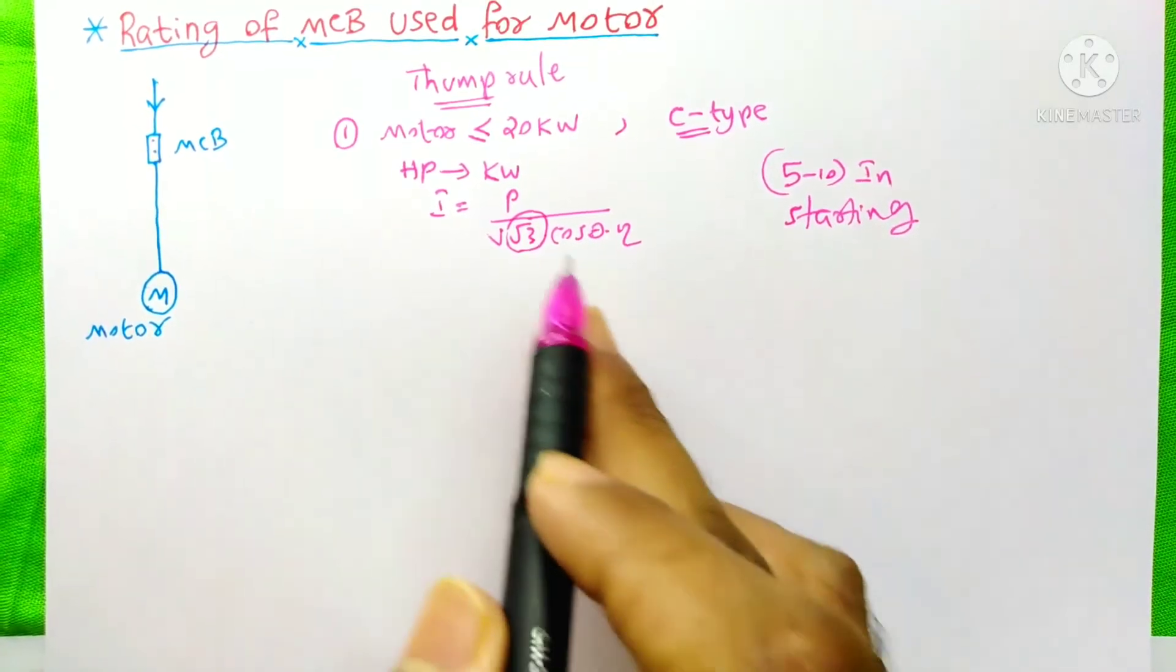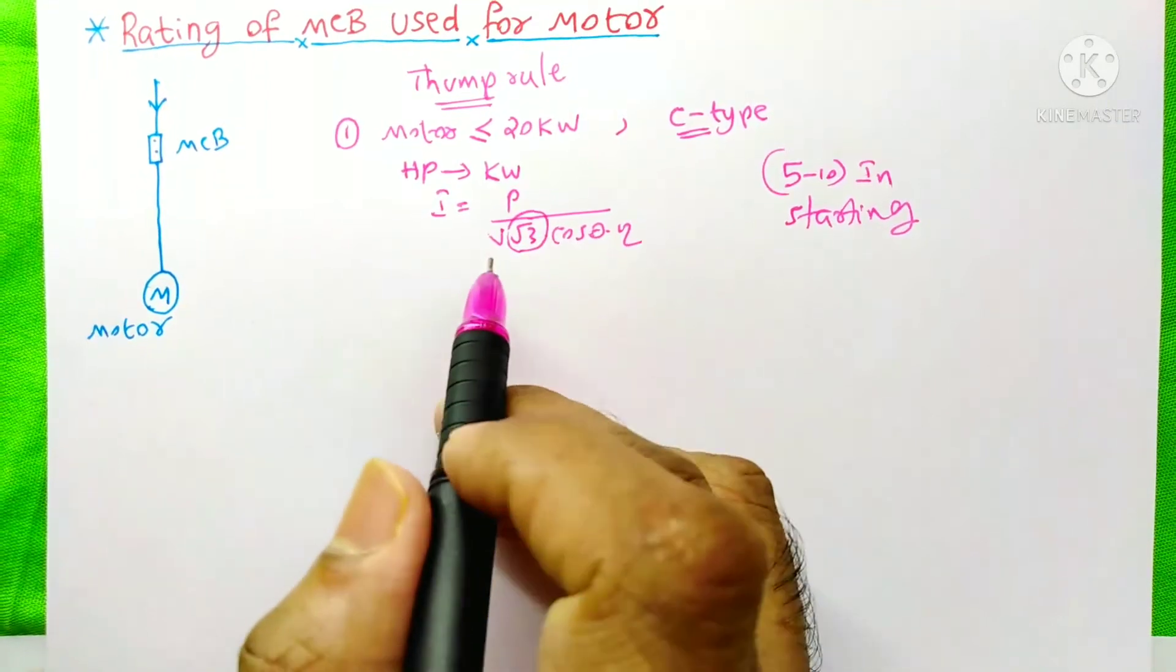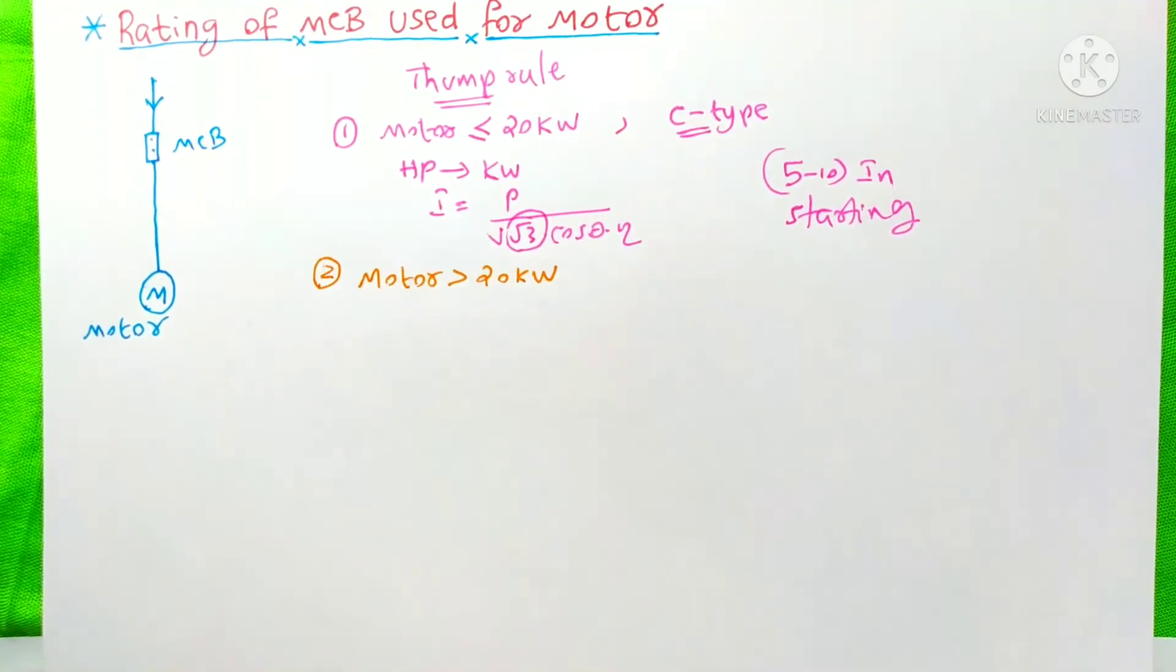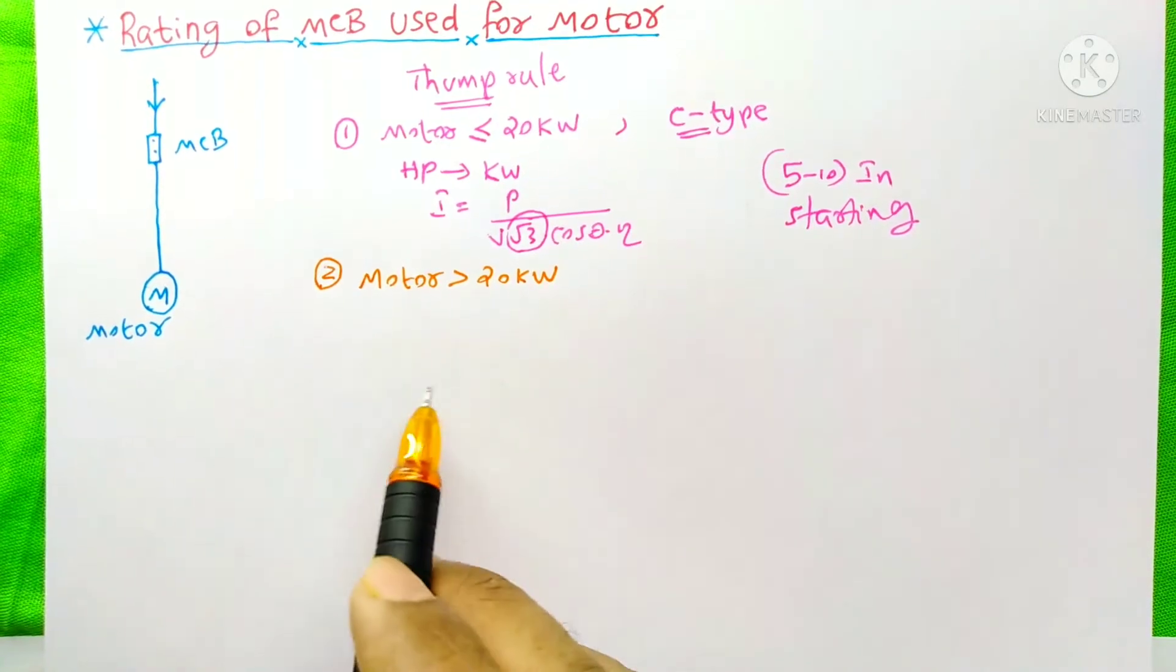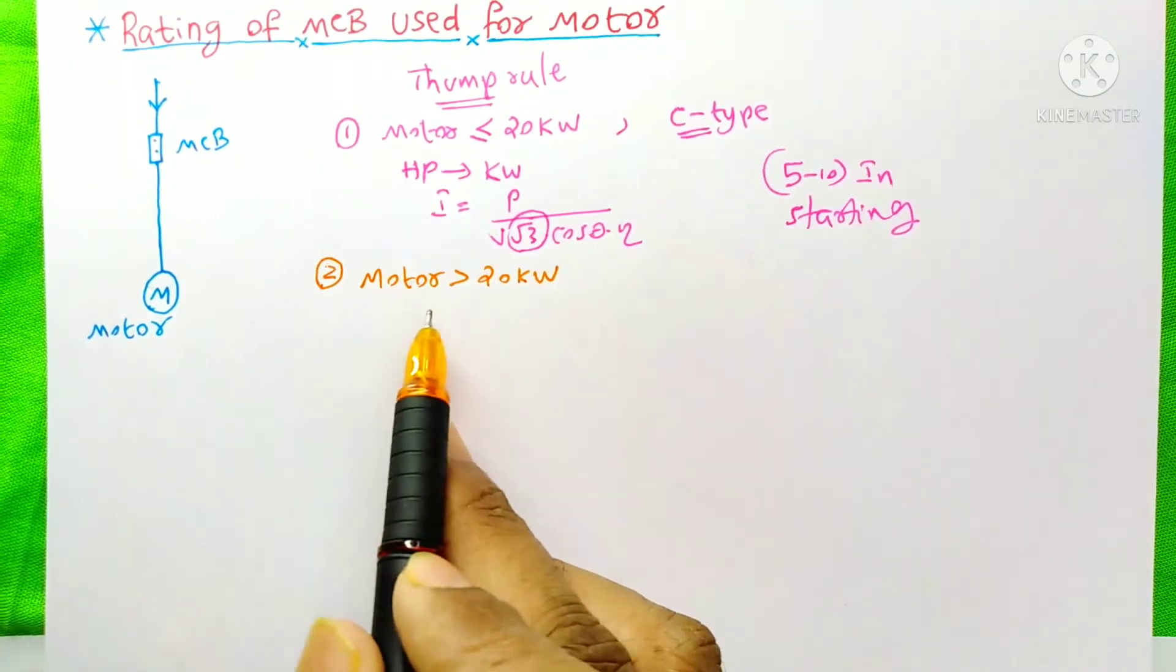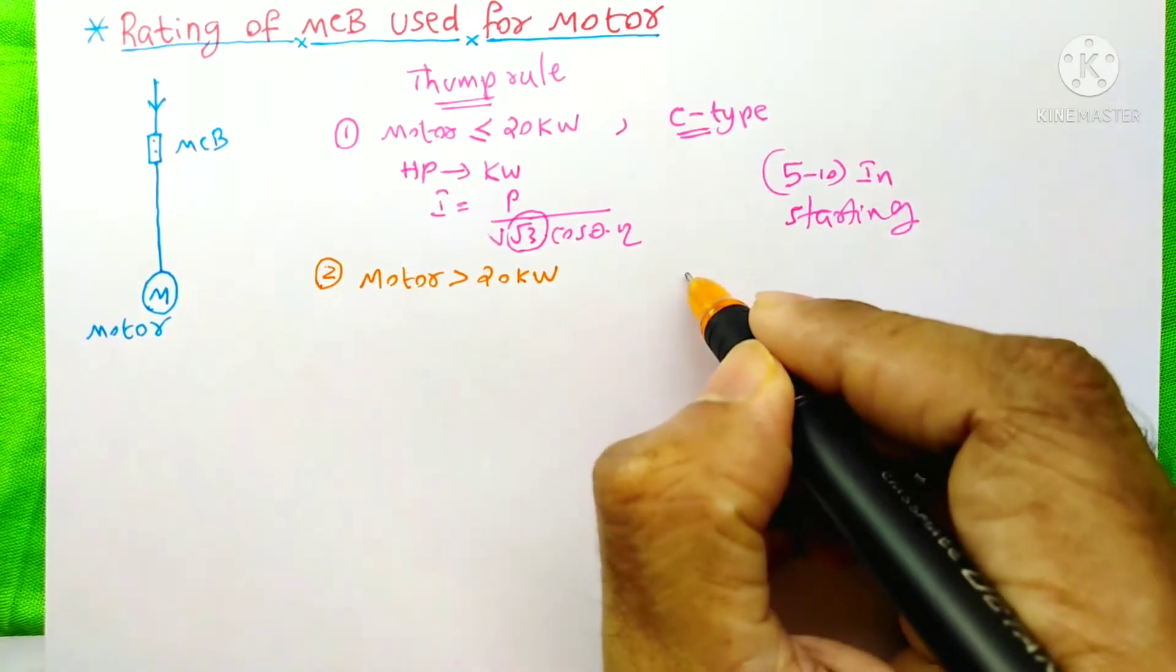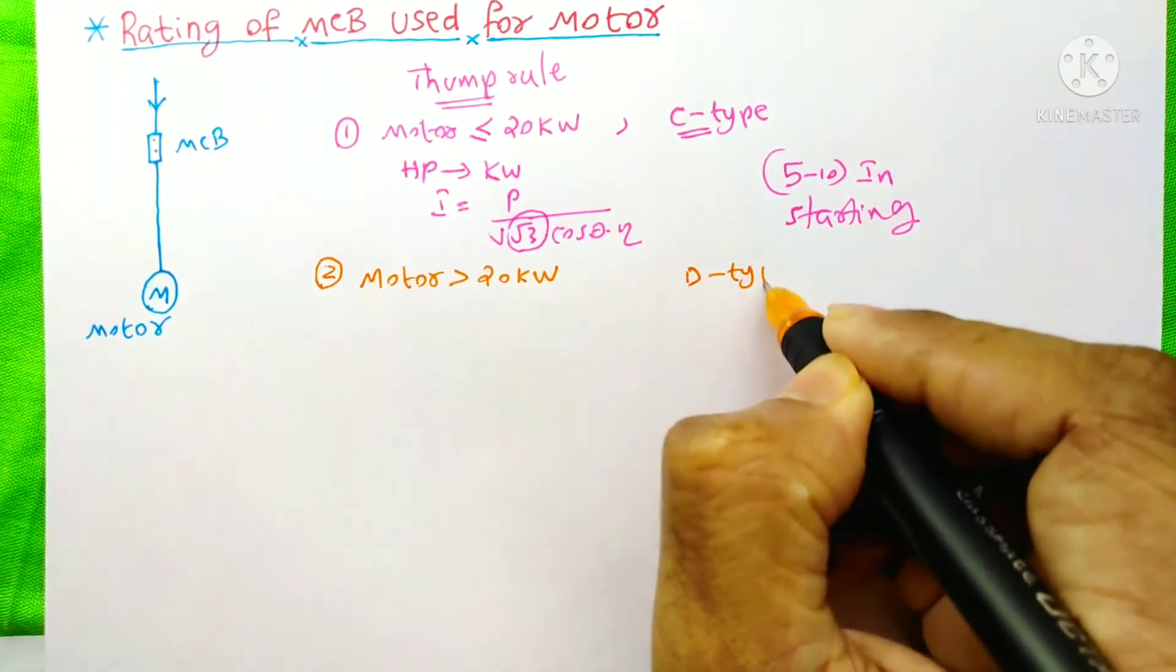The engineers who work in the industry have much experience, that's why they use this method. And thumb rule number 2 is, if the motor's capacity is greater than 20kW, then you must choose a D-type MCB.